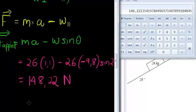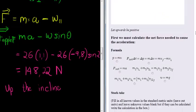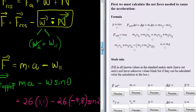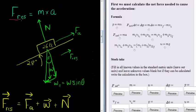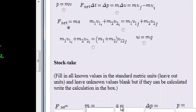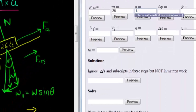The direction of the applied force is up the incline, because the container is accelerating up the incline. Now let's fill this out according to the conditions given. First we calculate the net force — it exists because the object is accelerating up the incline. Net force equals mass times acceleration: 26 times 1.1 equals 28.6 Newtons.